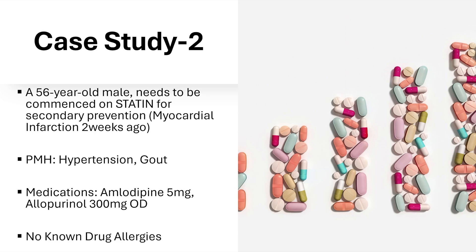In the second case study, the same patient profile is used — a 56-year-old male who needs to be commenced on a statin for secondary prevention, where a cardiovascular incident has already happened. In this patient, they had a myocardial infarction, also known as a heart attack, two weeks ago. They also have hypertension and gout, their medications include amlodipine 5 milligram and allopurinol 300 milligram, and they have no known drug allergies.